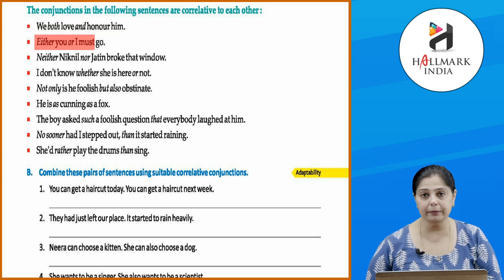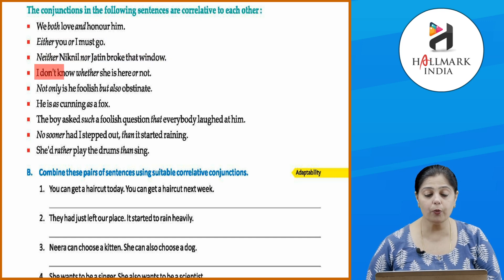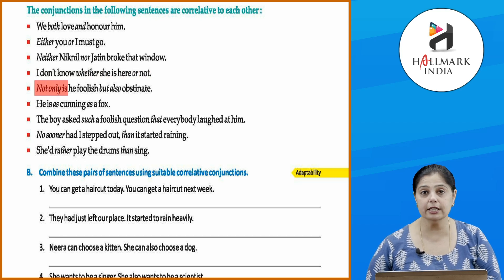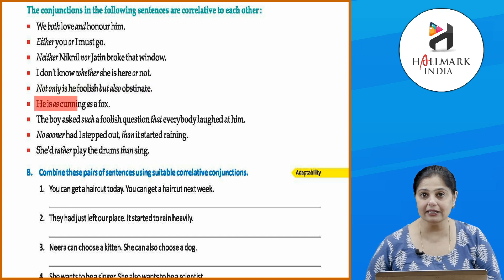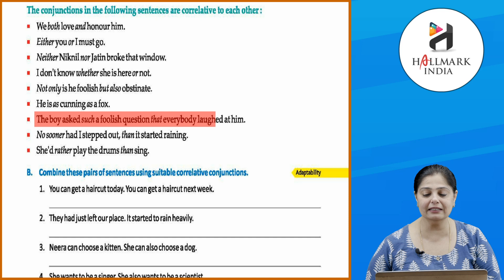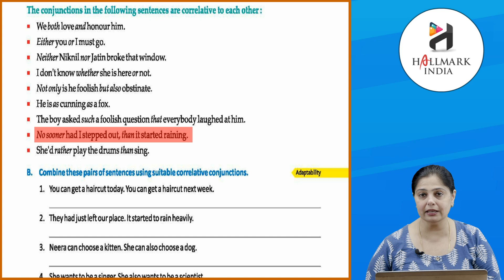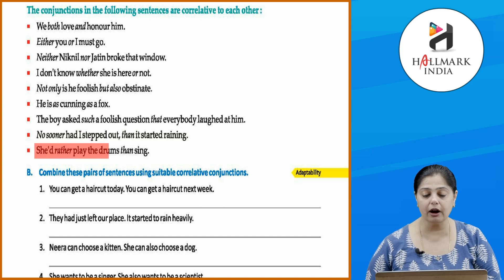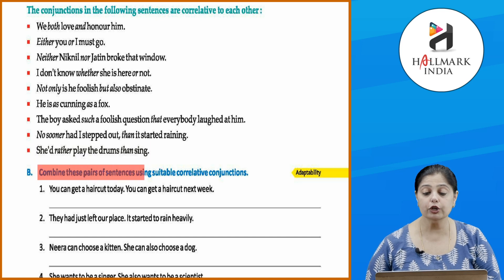More examples of co-relative conjunctions: 'Either you or I must go.' 'Neither Nikhil nor Jatin broke that window.' 'I don't know whether she is here or not.' 'Not only is he foolish but also obstinate.' 'He is as cunning as a fox.' 'The boy asked such a foolish question that everybody laughed at him.' 'No sooner had I stepped out than it started raining.' 'She'd rather play the drums than sing.'